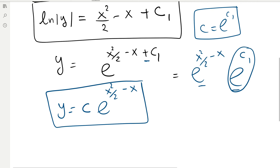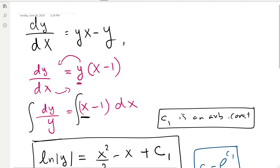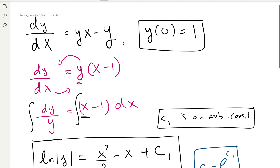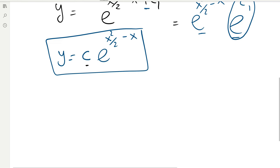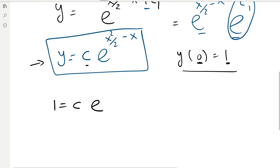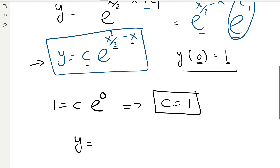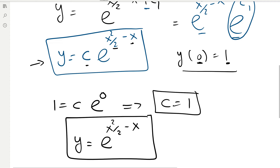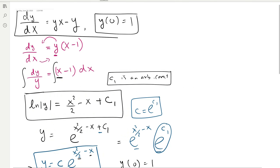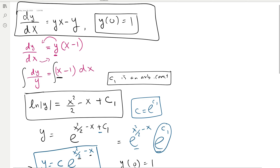Now let's treat this as an initial value problem with initial condition y(0) = 1. This means when x = 0, y = 1. Substituting into the explicit solution: 1 = C · e^(0²/2 − 0) = C · e^0 = C · 1, so C = 1. The solution to the initial value problem is therefore y = e^(x²/2 − x). We call it an initial value problem because we have both a differential equation and an initial condition.